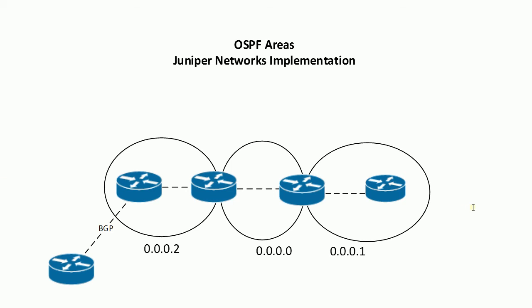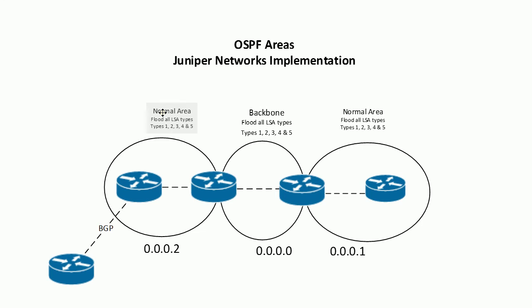Looking at this topology, we have a backbone area and two other areas. Typically in OSPF, we create these other areas specifically to reduce the flooding of LSAs within the area or reduce the size of the LSA database — maybe we have a small or underpowered router that can't handle the load of the backbone. The misconception is that by simply creating the areas we've made the LSA database smaller, and that's not true. We have to actually configure some additional options on the areas.